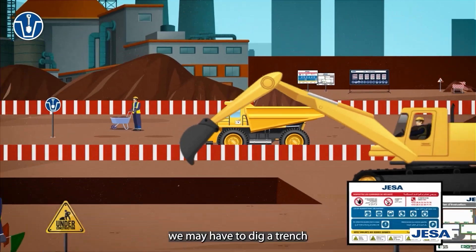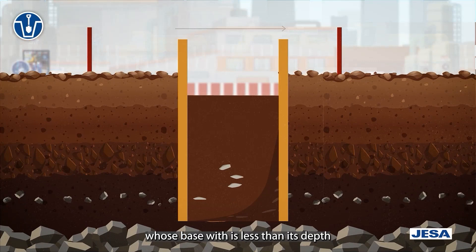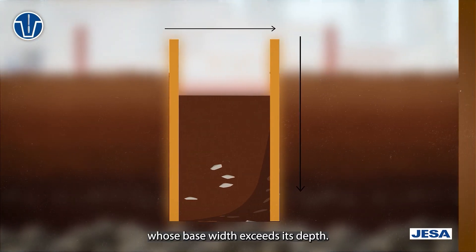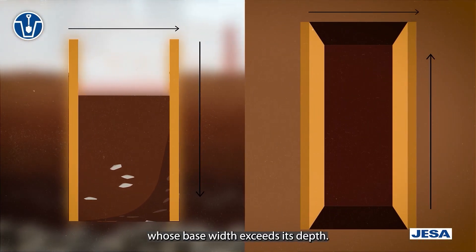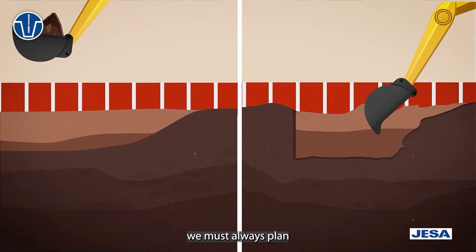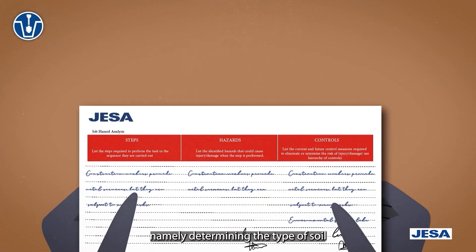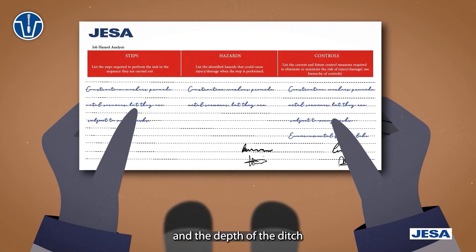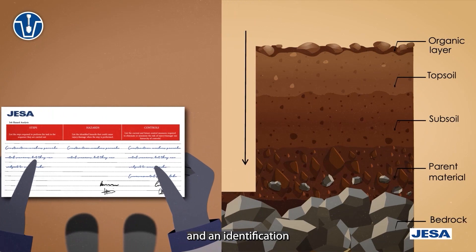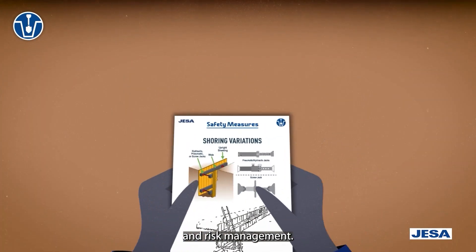In a construction site, we may have to dig a trench whose base width is less than its depth, or an excavation whose base width exceeds its depth. In order to avoid any collapse, we must always plan the excavation activity — namely determining the type of soil, the depth of the ditch, and an identification of the necessary control measures and risk management.